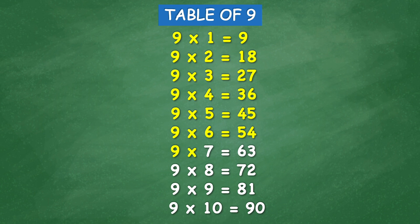9 times 6 equal 54, 9 times 7 equal 63, 9 times 8 equal 72, 9 times 9 equal 81, 9 times 10 equal 90.